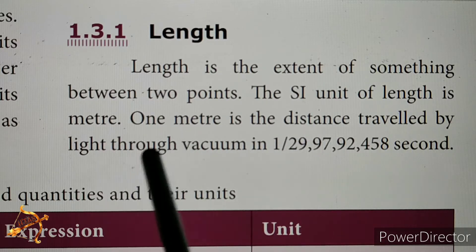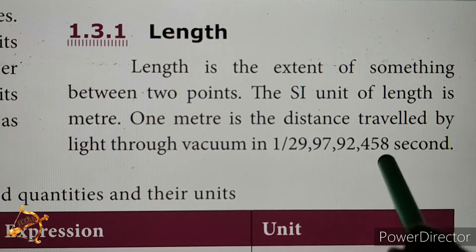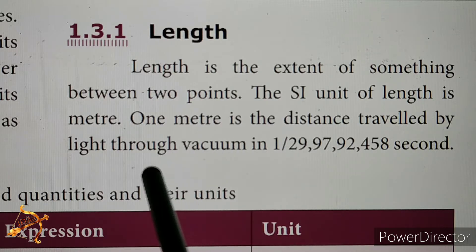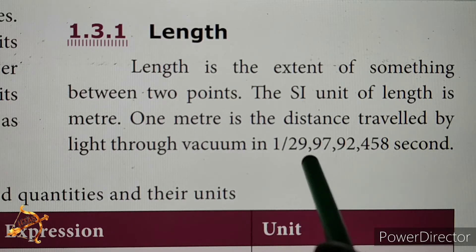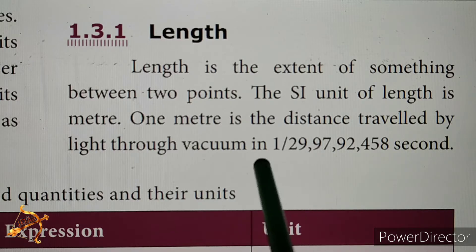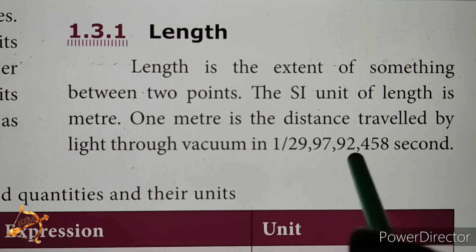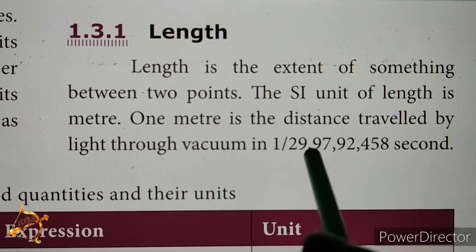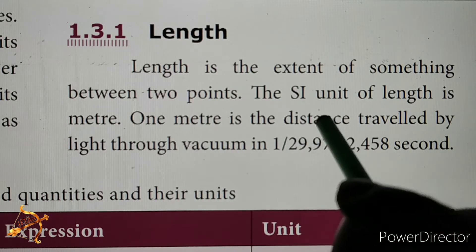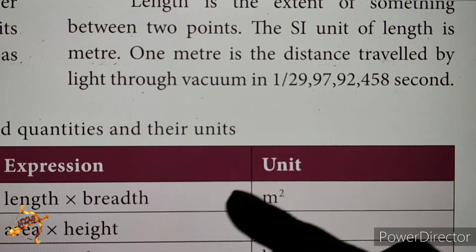The meter is defined as the distance traveled by light through vacuum in 1/299,792,458 of a second. Light travels through vacuum at a very high speed, and that small time fraction gives us 1 meter. The SI unit of length is 1 meter.